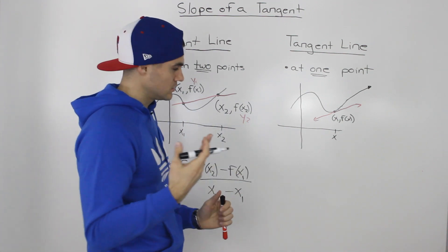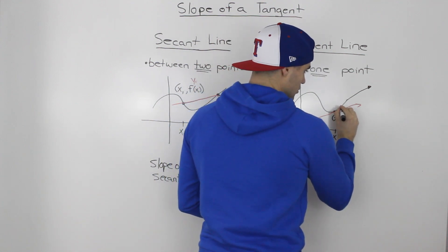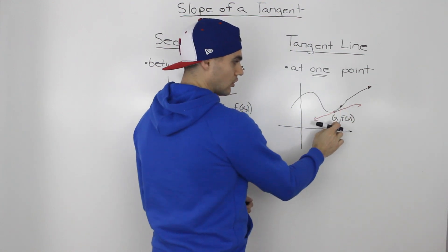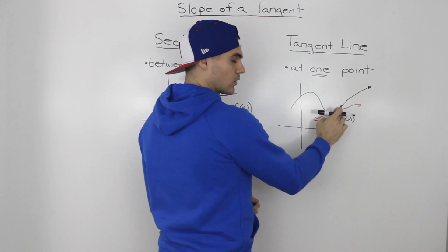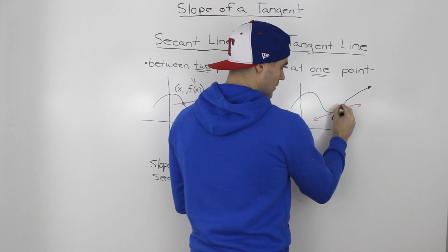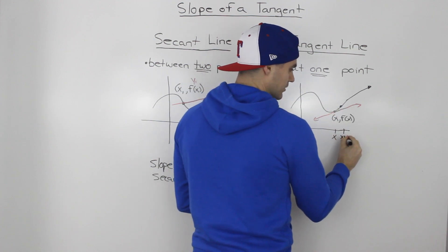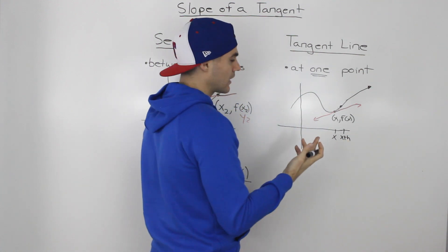Well, if you remember from advanced functions, this is a bit of a review. What you can do is you could pick a point that's very close to that coordinate for which you have the tangent on. So let's say that we pick a coordinate that's close and the x value of it is x plus h, where h is just some kind of small number.